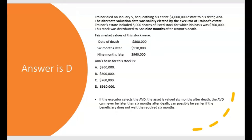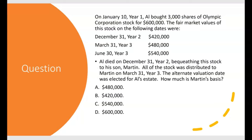Let's see why that's important. Say she sells the stock for a million dollars. If her basis were $800,000 — the value at date of death — she'd have a $200,000 long-term capital gain. But because she gets to use the $910,000 alternate valuation date basis — having waited at least six months — she only has a $90,000 long-term capital gain.